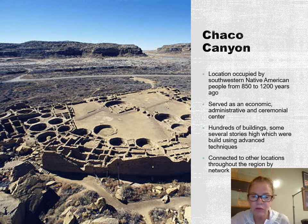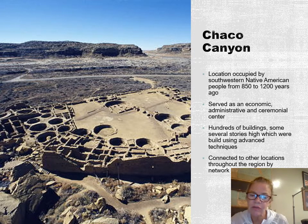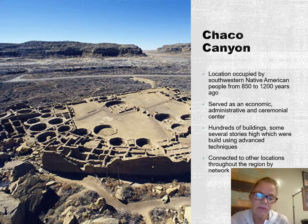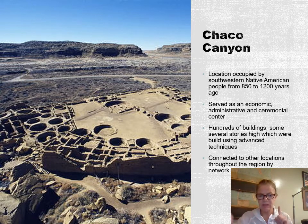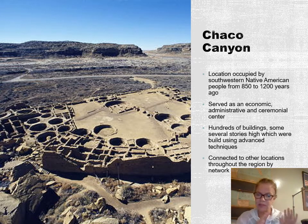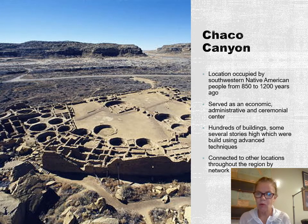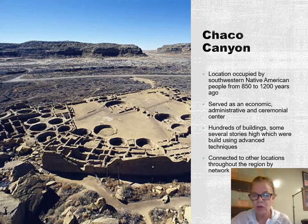This is an image of Chaco Canyon, built about 850 to 1200 years ago — around 1,000 years ago. It was a center for administration, religious ceremonies, and those sorts of things, with hundreds of buildings at this location. They had very intricate road systems that connected it to other cities in the area. They were all related with the same culture — the Anasazi, or Pueblo culture, the Chaco people.